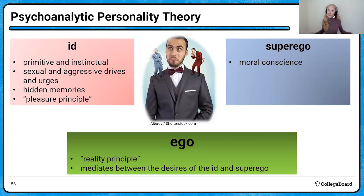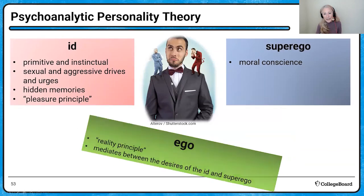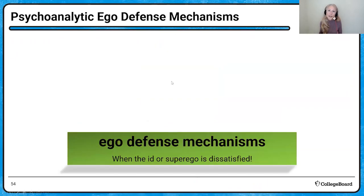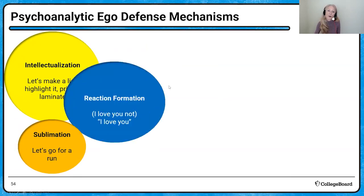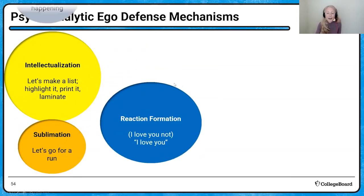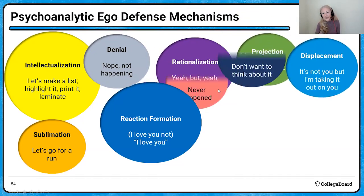The ego can't always give in to the id, and sometimes doesn't give in to the superego. It has to mediate between the desires of the id and the superego — quite a balancing act. When the id and superego are dissatisfied, we have what we call defense mechanisms. There are a lot of defense mechanisms, but I'm going to focus on the four most commonly confused.